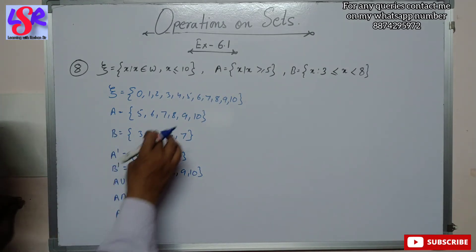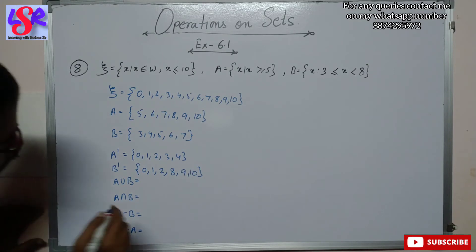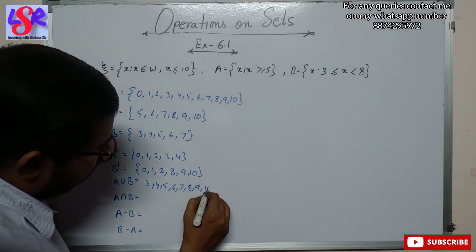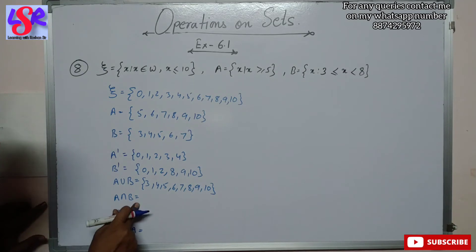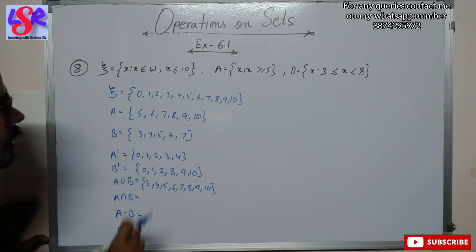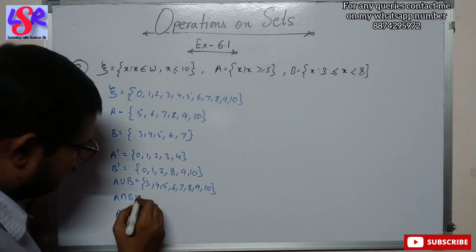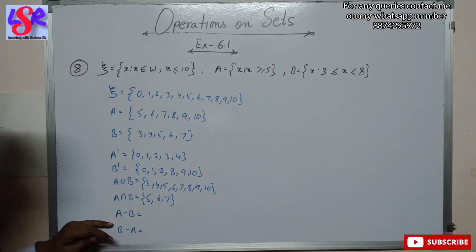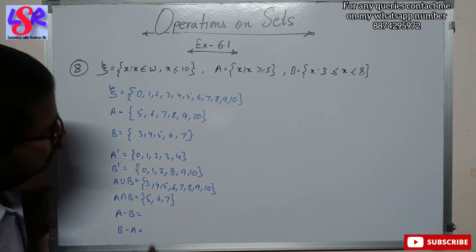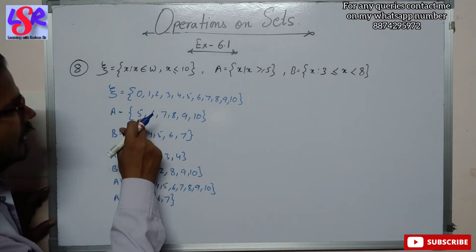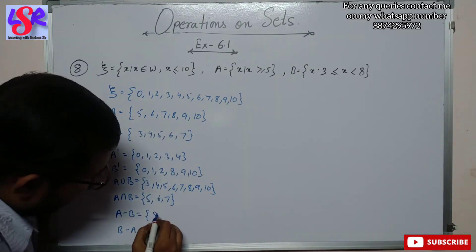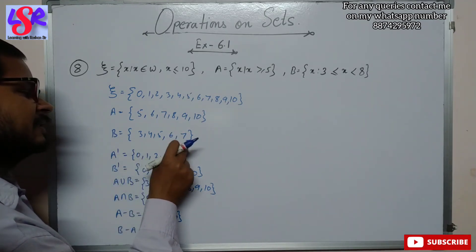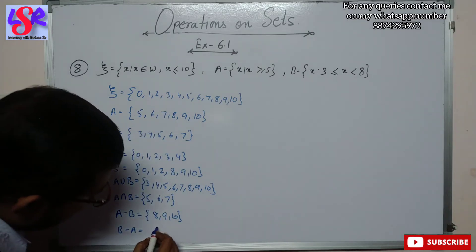A union B combines both sets: {3, 4, 5, 6, 7, 8, 9, 10}. A intersection B is the common elements: {5, 6, 7}. A minus B removes the common elements 5, 6, 7 from A, leaving {8, 9, 10}. B minus A removes 5, 6, 7 from B, leaving {3, 4}.